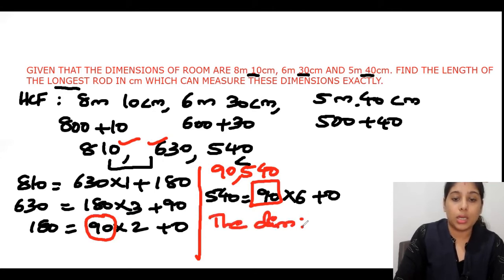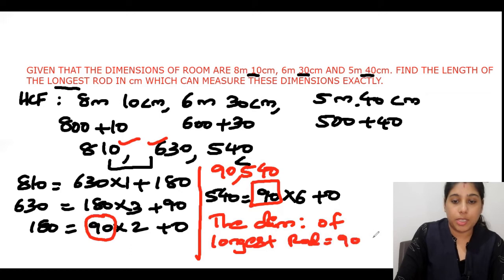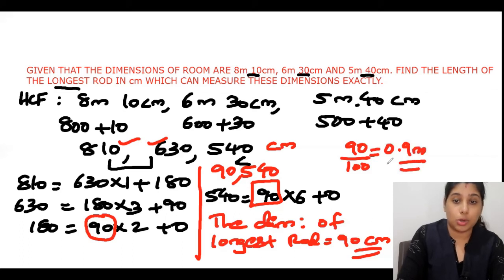The dimension of the longest rod is 90 centimeters. Why is it centimeters? Because we converted every number to centimeter units, so the answer is also in centimeters. If you want to convert this to meters, 1 meter is 100 centimeters, so 90 centimeters equals 0.9 meters. Both are correct answers: 0.9 meters or 90 centimeters.